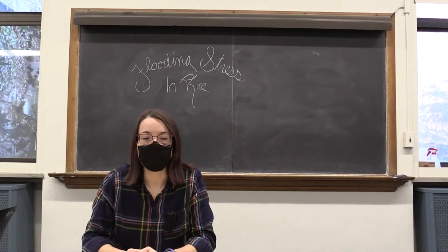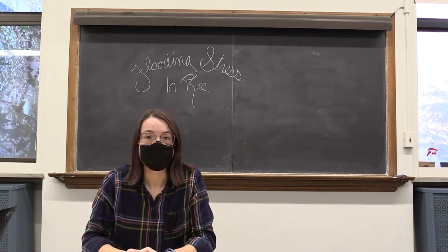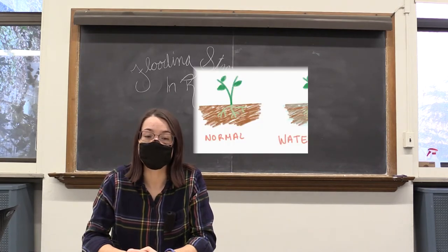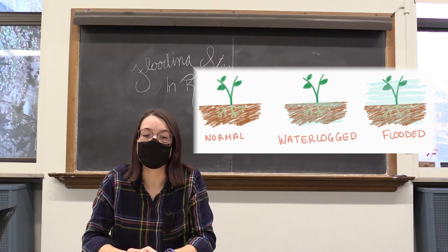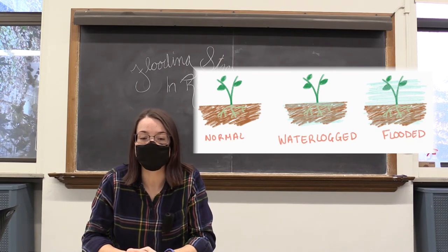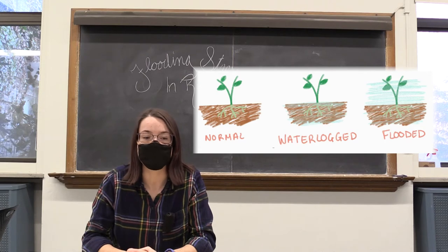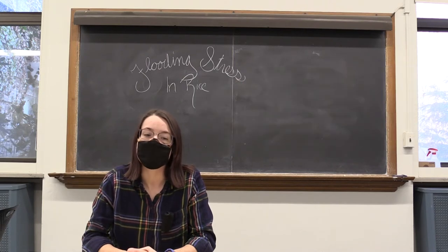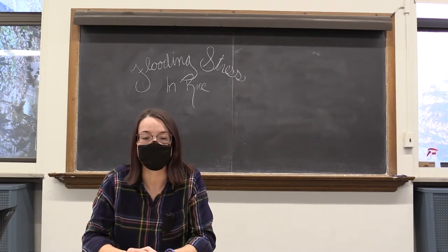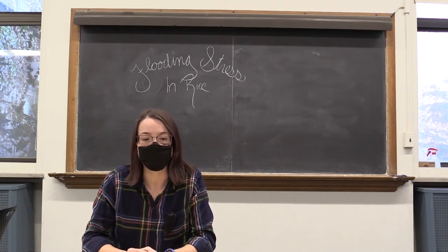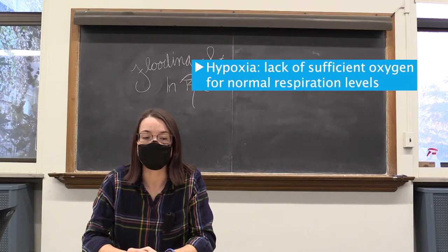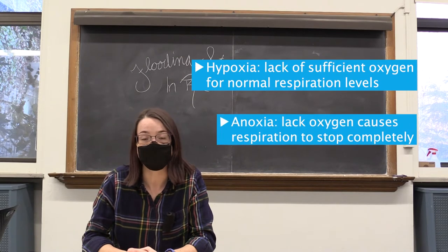Today we will be talking about how plants respond to being drowned. We all know that plants need water, but too much water, like in the case of root waterlogging or partial or complete plant flooding, means that they have limited access to oxygen since they are no longer exposed to as much air. Without oxygen, it becomes difficult for plants to photosynthesize and grow. The lack of sufficient oxygen for normal respiration levels is known as hypoxia, while the point at which respiration is forced to stop completely is anoxia.